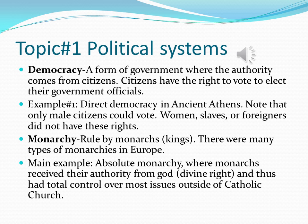Monarchy was rule by monarchs who were kings. There were many types of monarchies in Europe. The main example is the absolute monarchy, where monarchs received their authority from God, which was known as the divine right, and thus had total control over their population. The only time they didn't have that control was when the Catholic Church had more control over their regions, depending on the government, of course.